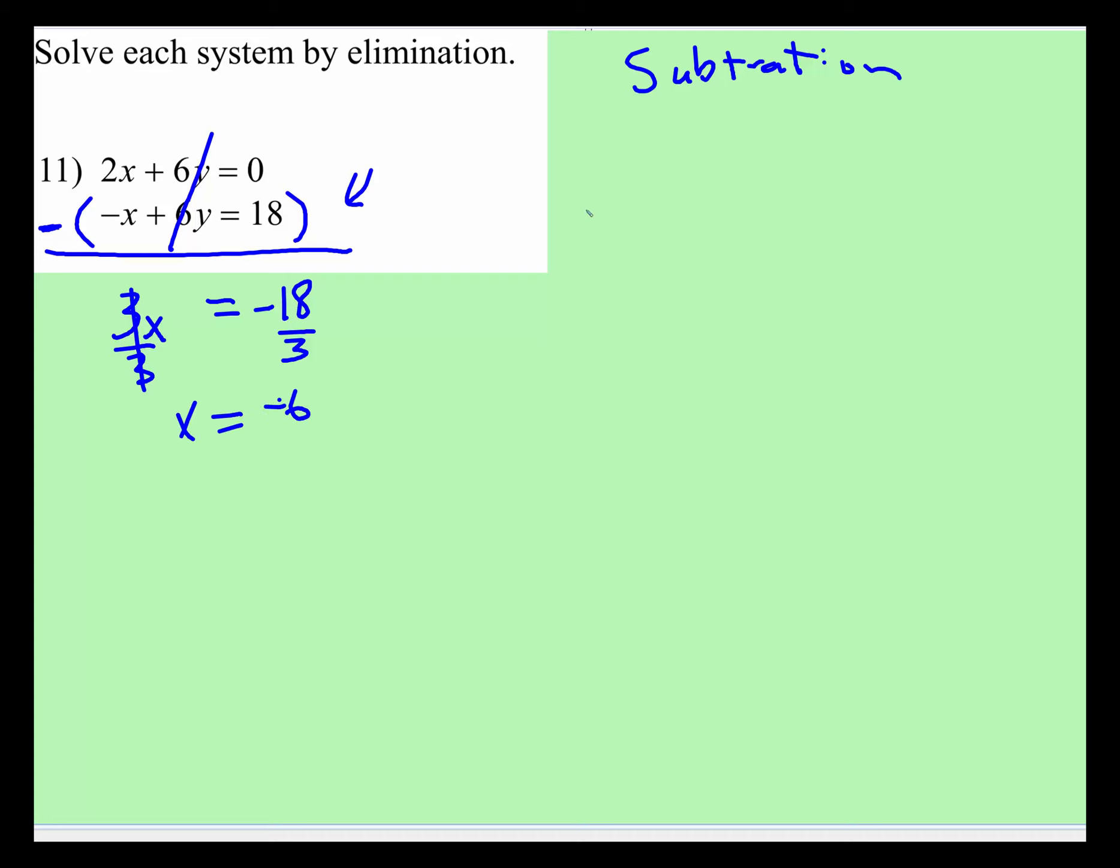Now we're going to take one of those original equations and solve for y. So I'll take the top equation, 2 times negative 6 plus 6y is equal to 0.